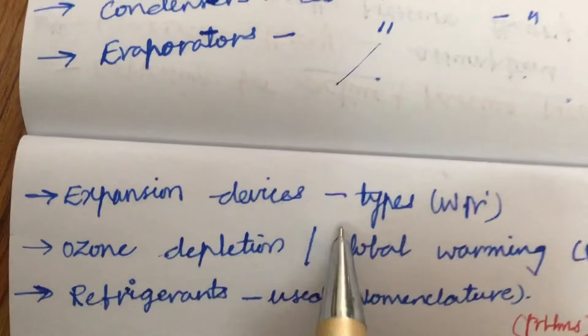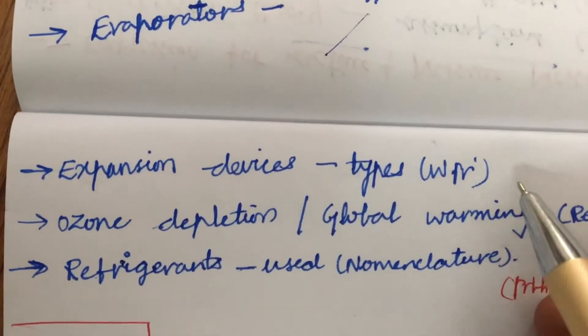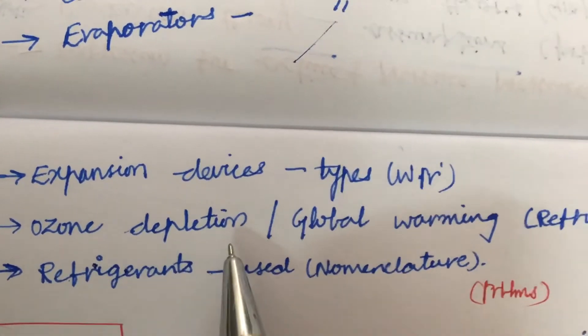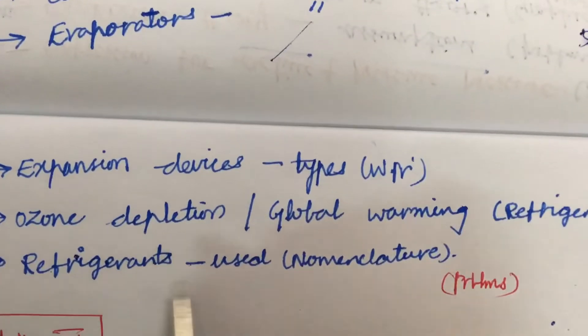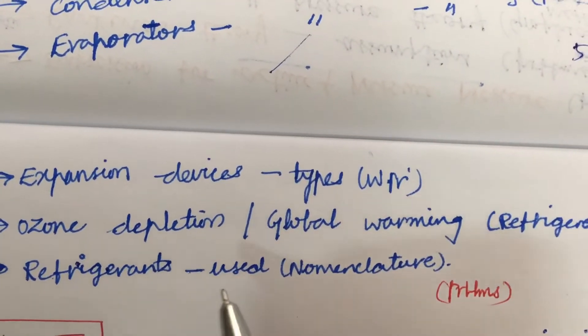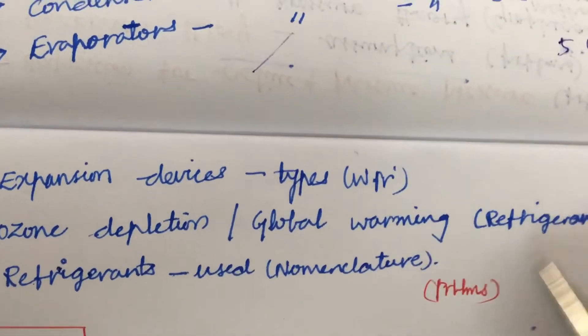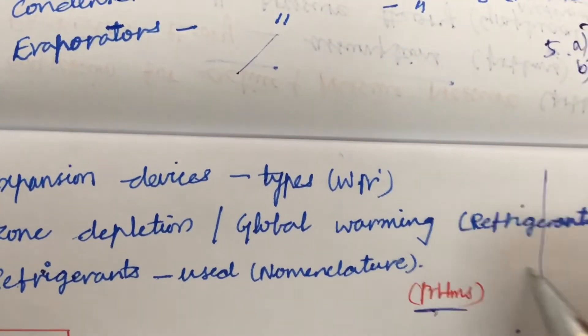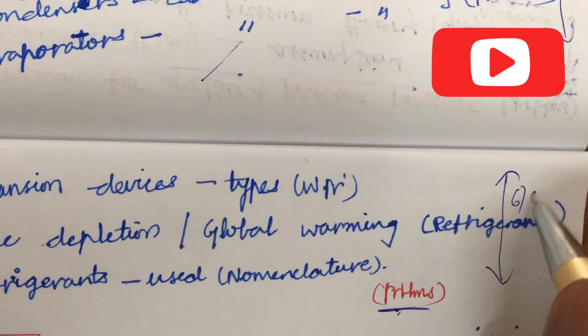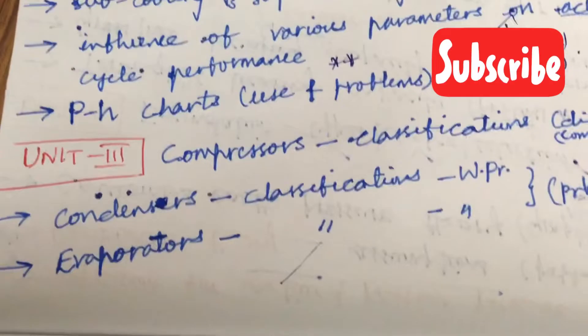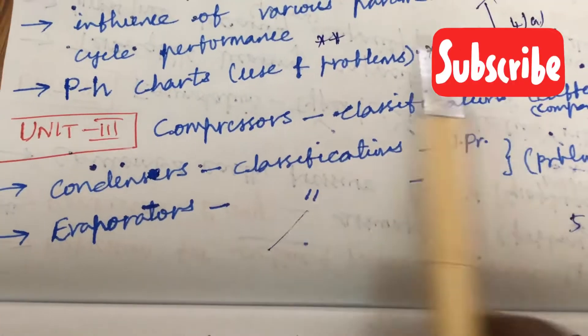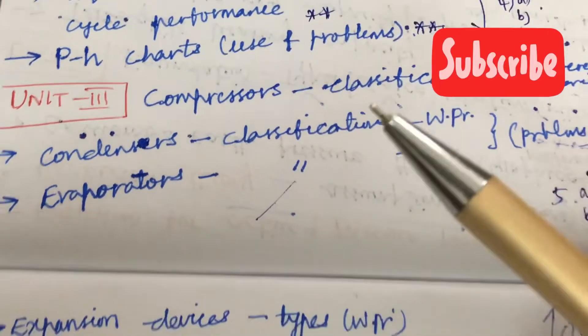And on all this they will be getting a fifth question, that is A as well as B related to these concepts. As well as it has even expansion devices, its types and the working principles, as well as the ozone depletion as well as the global warming related to refrigerants, as well as the use where the refrigerants are used and what are its nomenclatures. Much awaiting problems will be there from this unit. This is a sixth question A as well as B. Make sure to work out, there will be a theory question for sure from unit 3 followed by a problem.